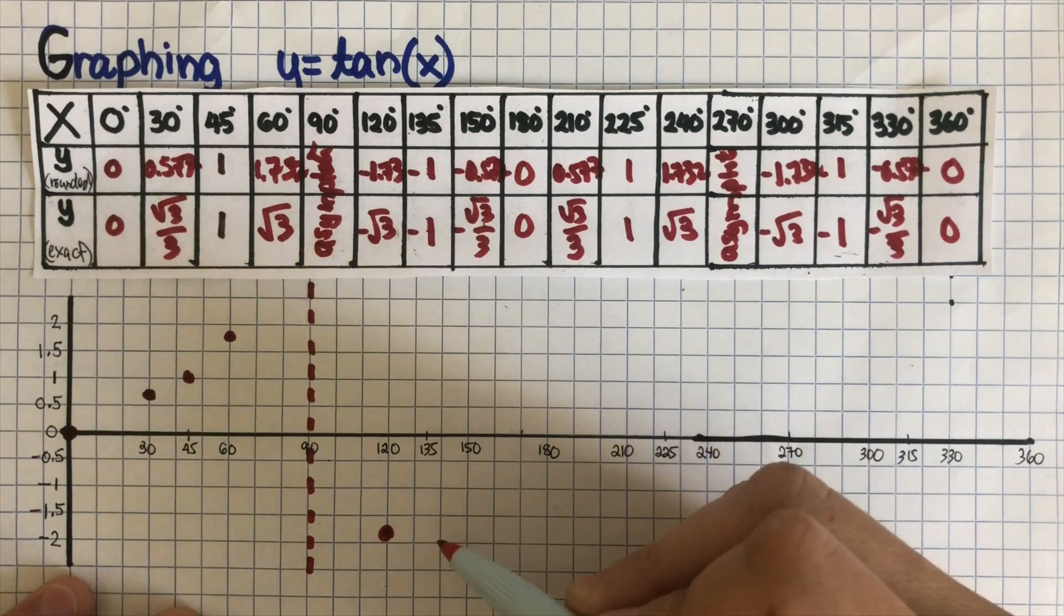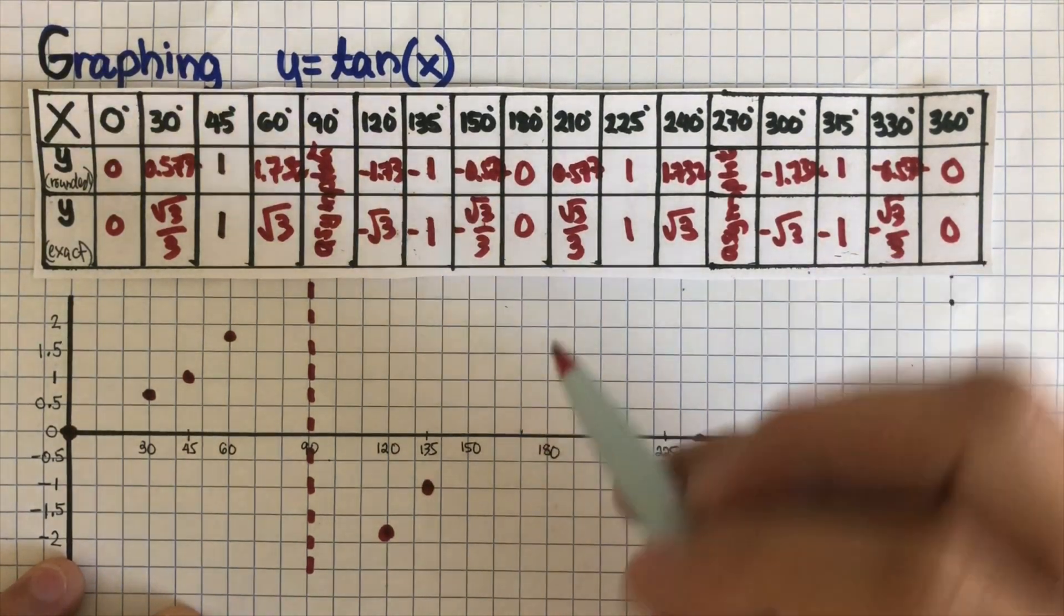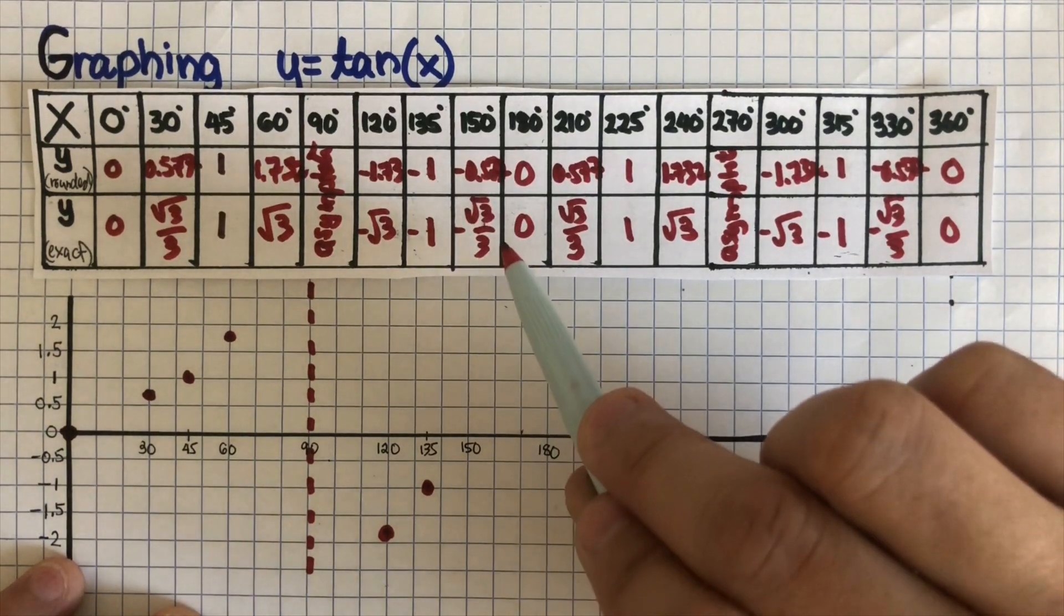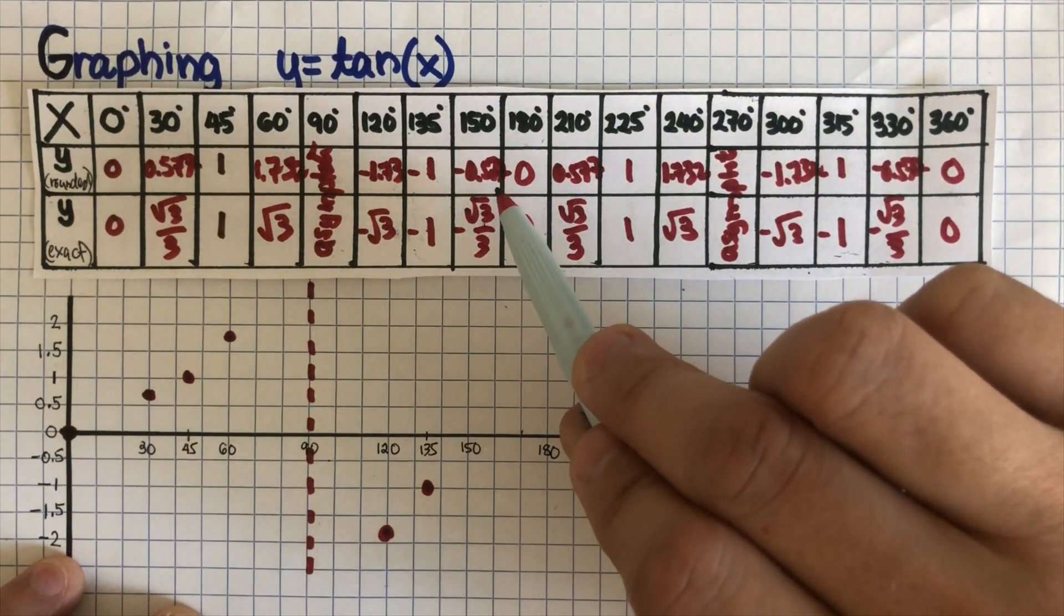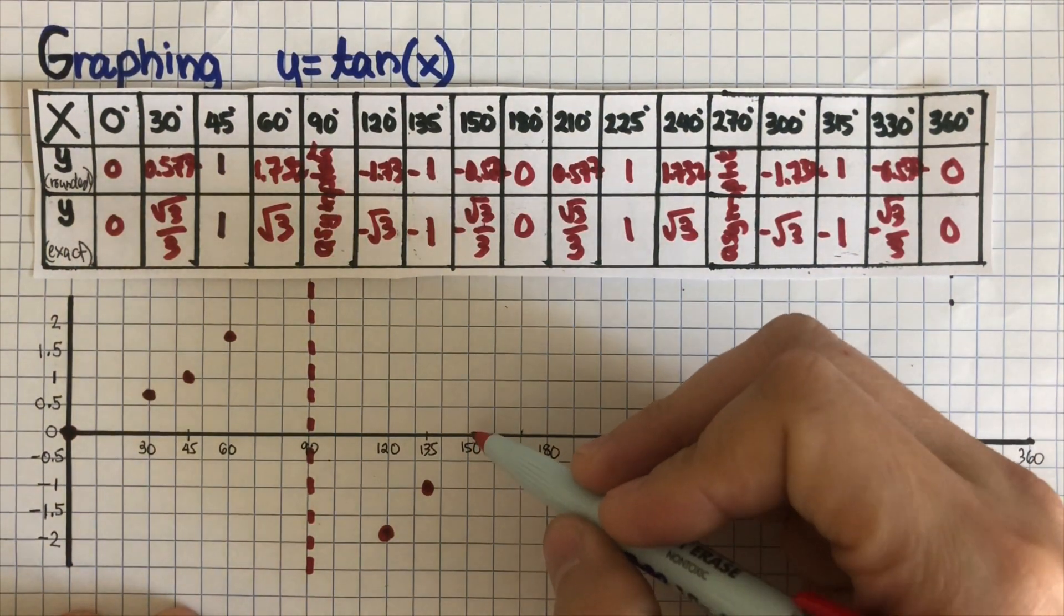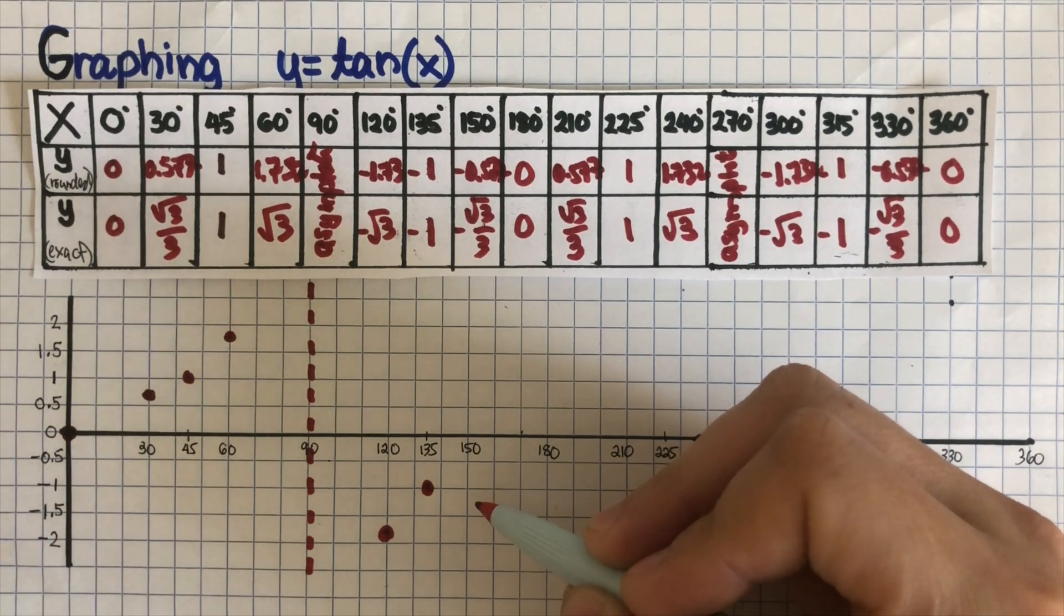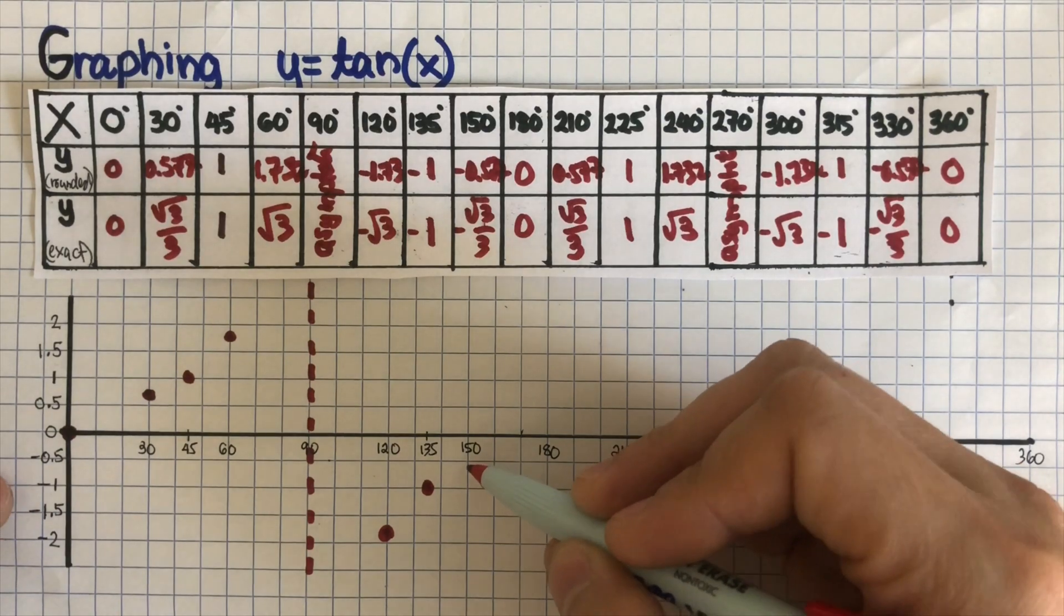And then 150 is negative 0.577, so it's going to be somewhere around here. And then 180 is a zero.